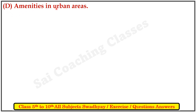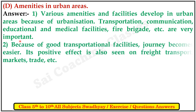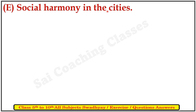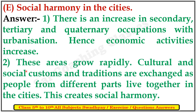D: Amenities in urban areas. First, various activities and facilities developed in urban areas because of urbanization — transportation, communication, educational and medical facilities, fire brigade, etc. are very important. E: Social harmony in the cities. First, there is an increase in secondary, tertiary and quaternary activities with urbanization, hence economic activity increases. Second, these areas grow rapidly; cultural and social customs and traditions are exchanged as people from different parts live together in the cities, creating social harmony.